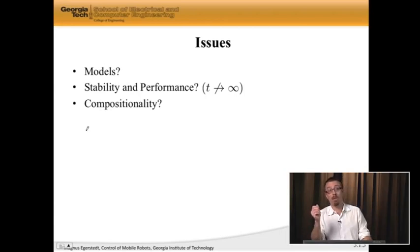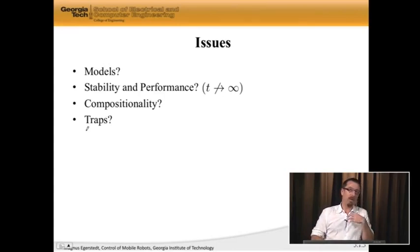We also have issues of compositionality. This is fancy speak for saying, if I have multiple modes and multiple controllers, how do I put them together? What is the way in which they fit together like Lego pieces in a big Lego drawing? And, most importantly, are there traps? Are there issues that arise because of these switches that we don't fully know how to deal with? Now, this module will deal with all of this and more, and in the next lecture, we're going to start with the first question, which is, how do we really model hybrid or switched systems in a systematic and coherent way?